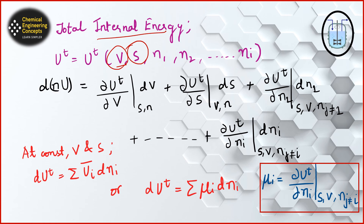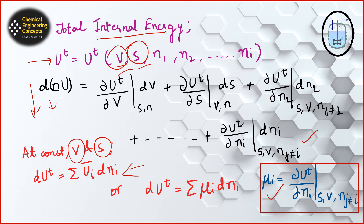The process is similar to before: we first define internal energy U and its natural variables — volume, entropy, and number of moles of each species. Totally differentiating this equation gives us the fundamental relation for U. If we take entropy and volume as constant, we can define chemical potential as (∂U/∂nᵢ) at constant entropy, volume, and nⱼ for all species j except species i.